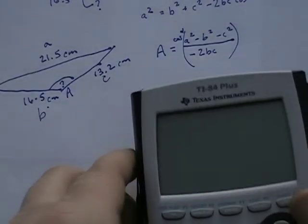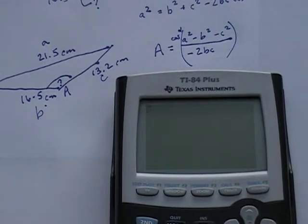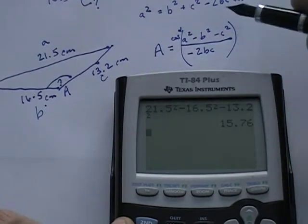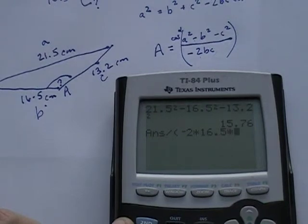And so I take my calculator, my trusty TI-84, my graphing calculator here, and I want to plug in these numbers. So I say a, which is 21.5 squared minus 16.5 squared minus 13.2 squared. So a, b and c, all squared. That's this numerator. Now the denominator. So divided by negative 2 times b times c, 16.5 and 13.2.